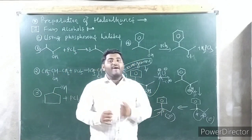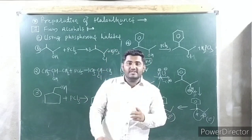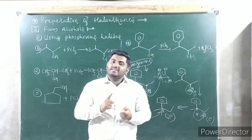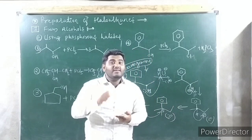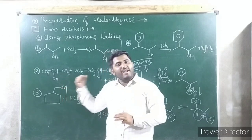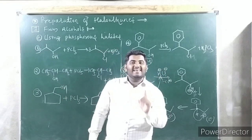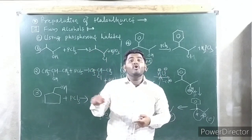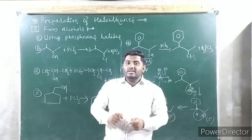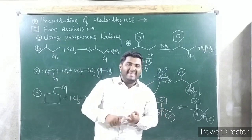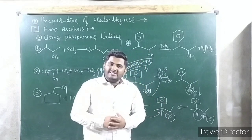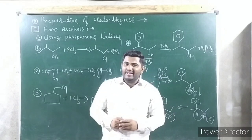This is regarding preparation of haloalkanes from alcohols — the first method. Three sub-methods we discussed: using halogen acid (HX) — there is rearrangement and carbocation formation; using thionyl chloride (SOCl₂) — Darzen's process, no rearrangement; using phosphorus halides (PX₃ and PX₅) — PX₃ byproduct is phosphorous acid, PX₅ byproducts are POX₃ and HX, no rearrangement. In the next class we will discuss preparation of haloalkanes from alkane, alkyne, and halogen exchange — Finkelstein and Swarts reactions.